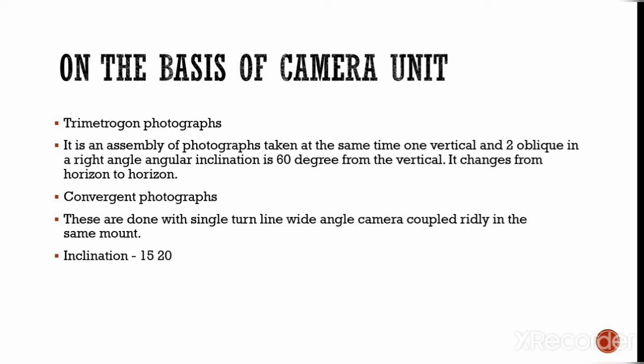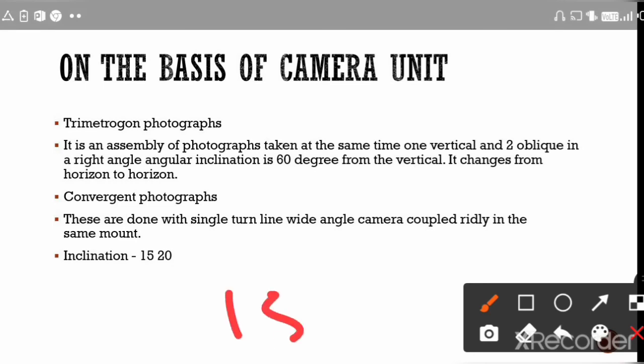On the basis of camera unit, there are two types. Trimetrogon photographs are an assembly of photographs taken at the same time: one vertical and two obliques, with a right angular inclination of 60 degrees from the vertical. Convergent photographs are taken with a single wide-angle camera, with an inclination of 15 to 20 degrees.